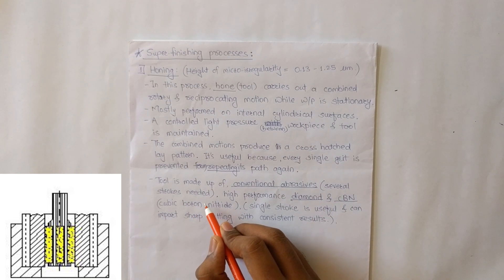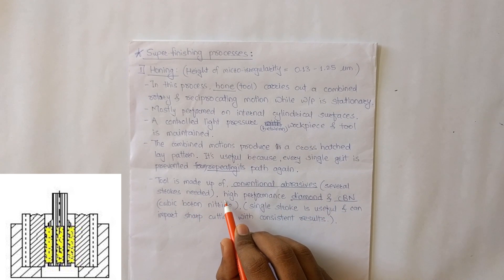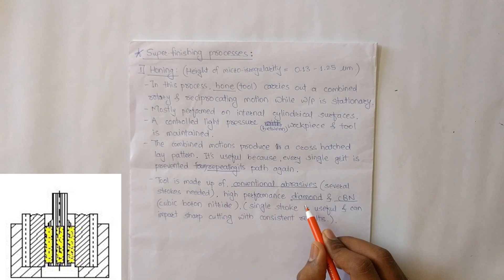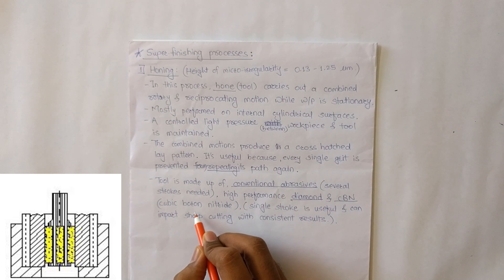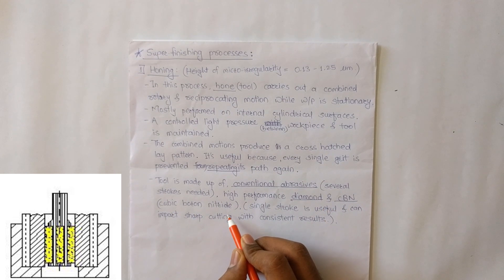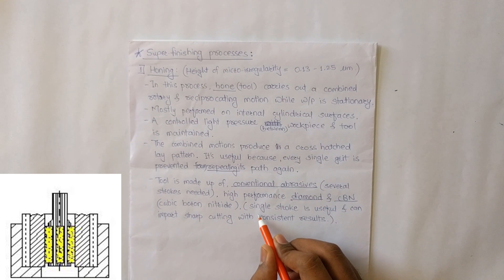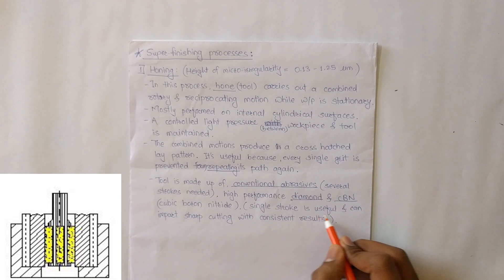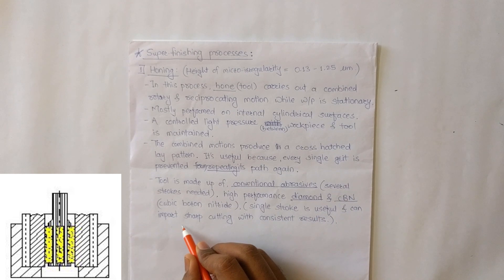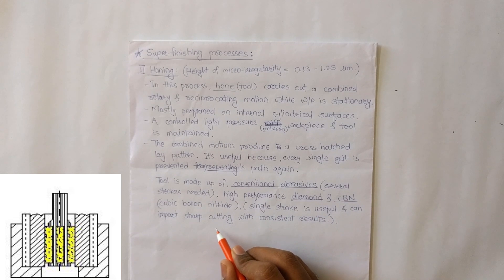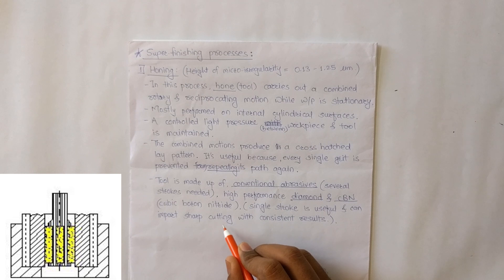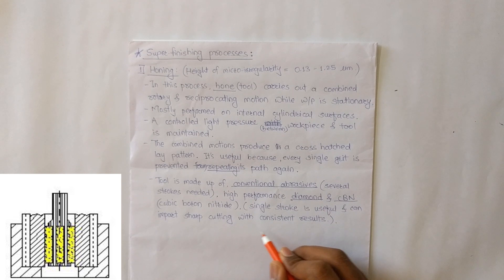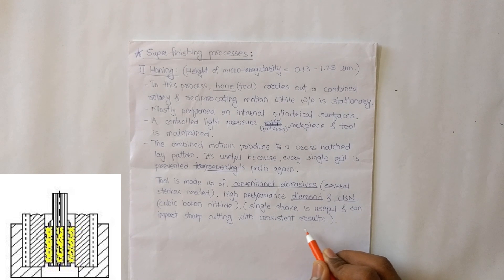The tool is made up of conventional abrasives, so several strokes are needed. If the tool is made up of high-performance diamond or CBN — cubic boron nitride — then a single stroke is sufficient and can impart sharp cutting edges with consistent results.